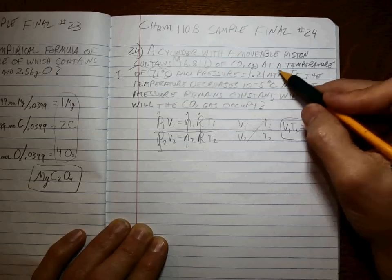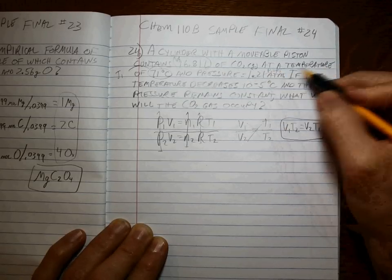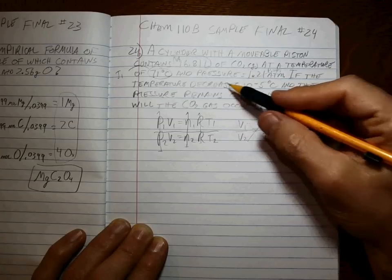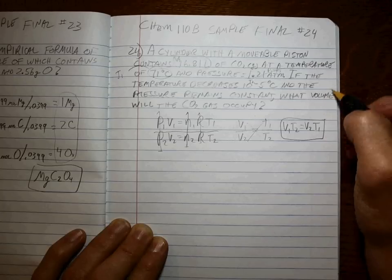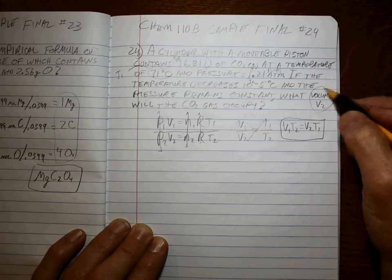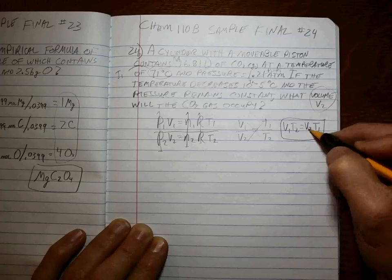Pressure remains constant, so P1 is equal to P2, and we don't have to worry about that. The temperature decreases, so this is now T2. What's the new volume? So isn't that what we're solving for? Okay, solving for V2.